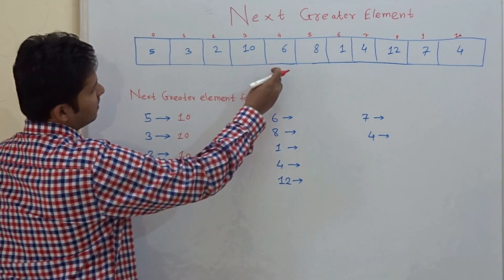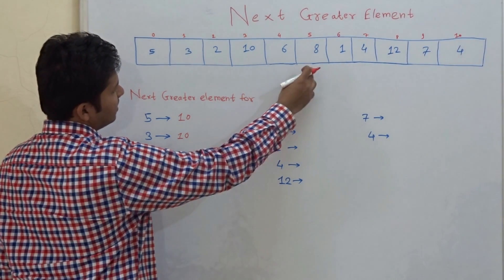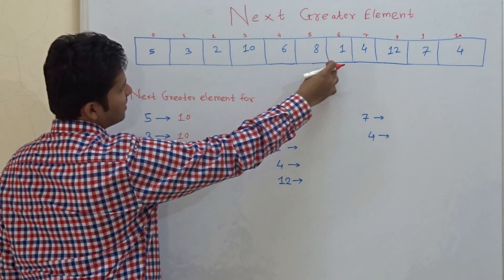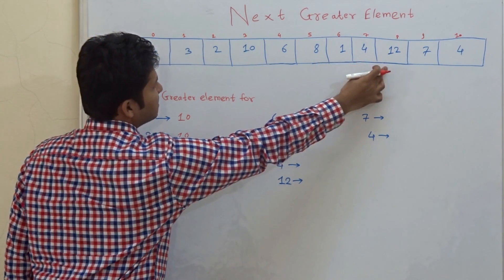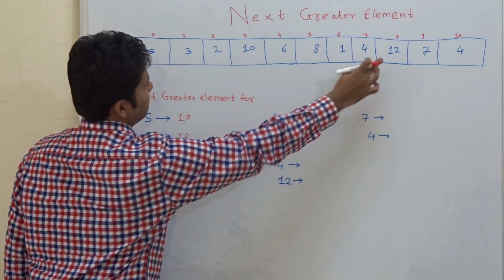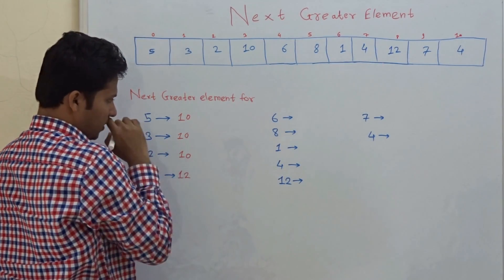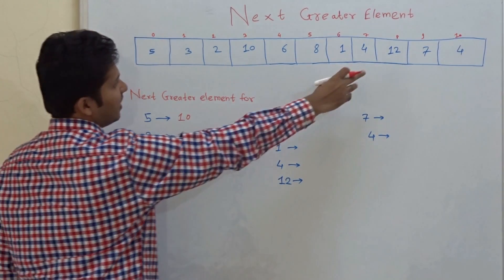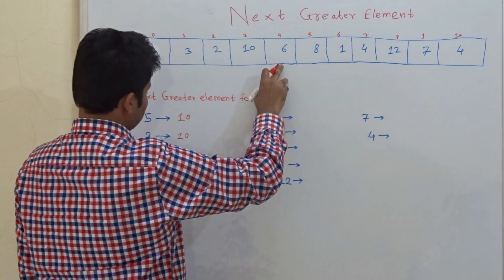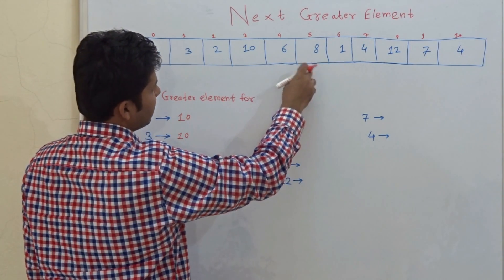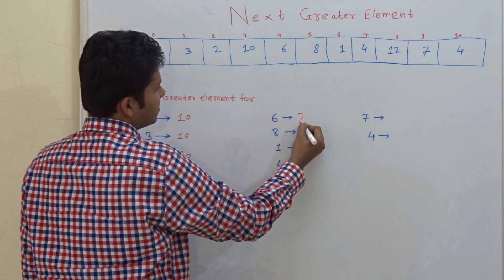For 10, 6 is less than 10, 8 is less than 10, 1 is less than 10, 4 is less than 10, and 12 is greater than 10. So 12 is the next greater element for 10. For 6, 8 is greater than 6, so 8 is the next greater element.